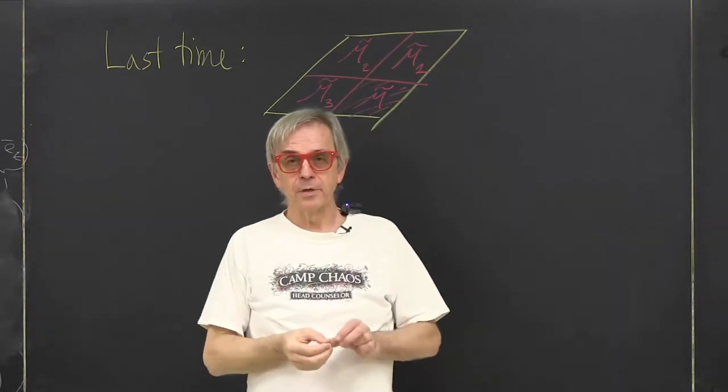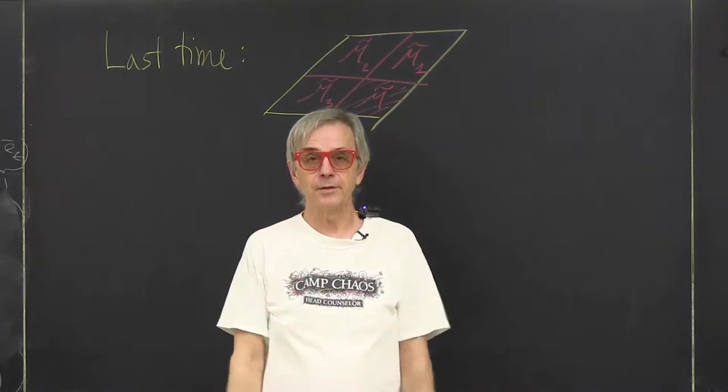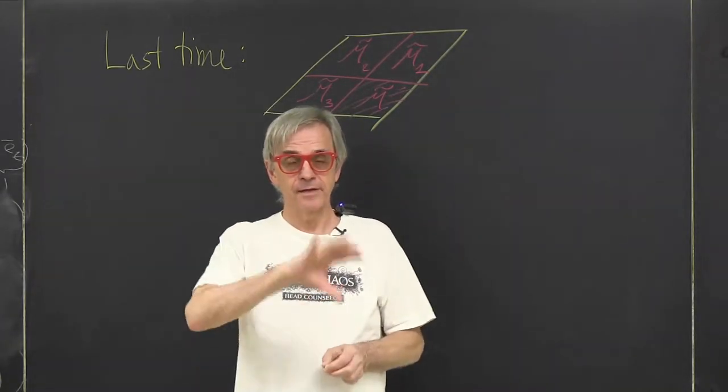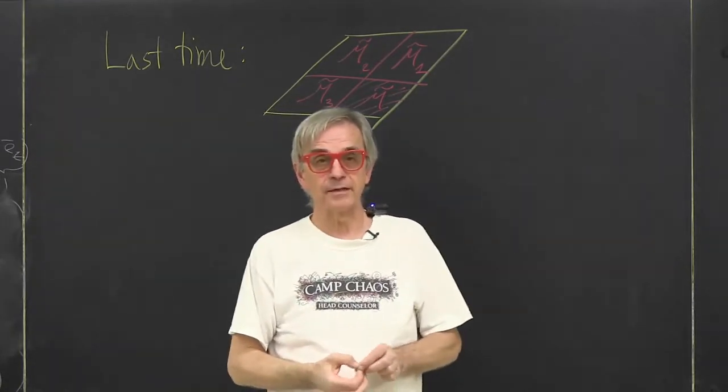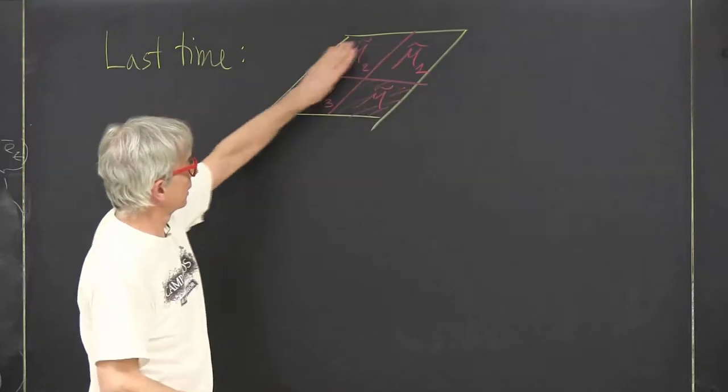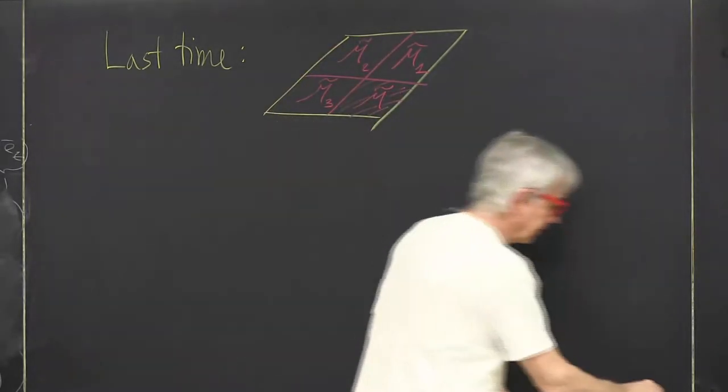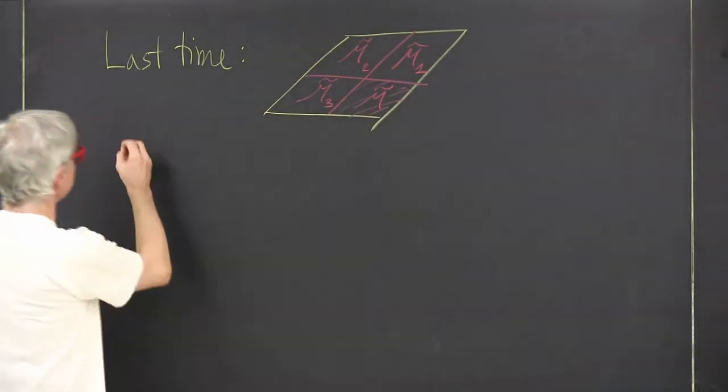So last time we showed that if the state space is divided into a set of tiles of the same size which can be mapped into each other by a finite group, then we can replace a function defined over the whole space.